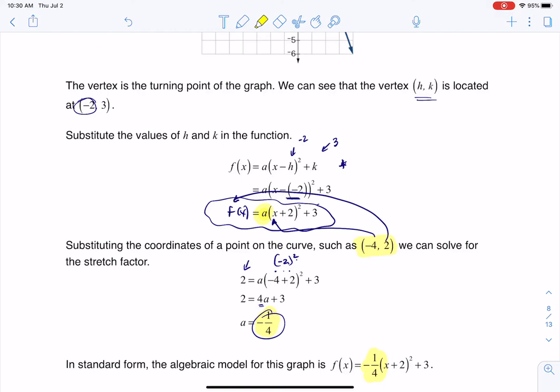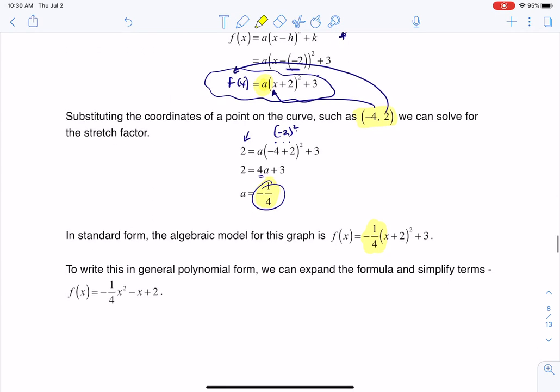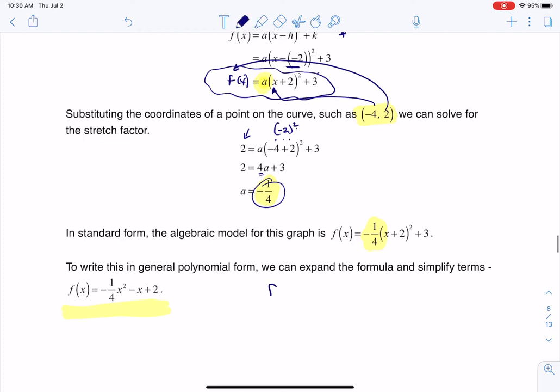If I want to get it into standard form, I just need to, or I should say general form, I need to simplify that and multiply it out. Now, here I'm just cutting to the chase with my answer, but I'll go ahead and work it out for you just so you can see it. So this would be -1/4, and if I take (x + 2)², that's going to be x² + 4x + 4. And then I have this + 3.